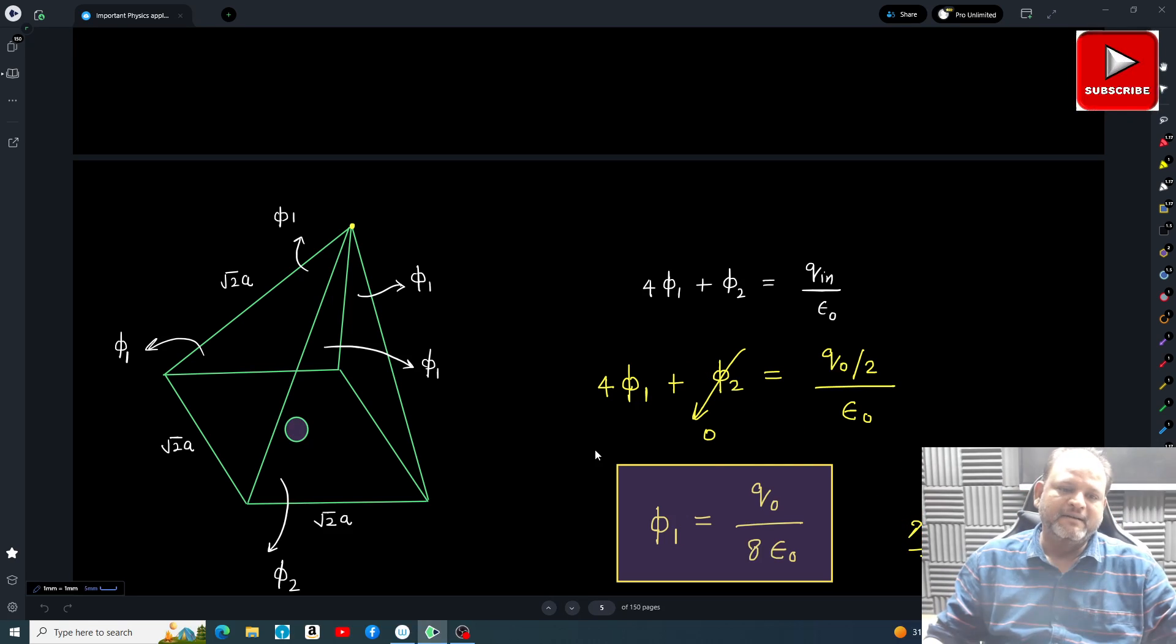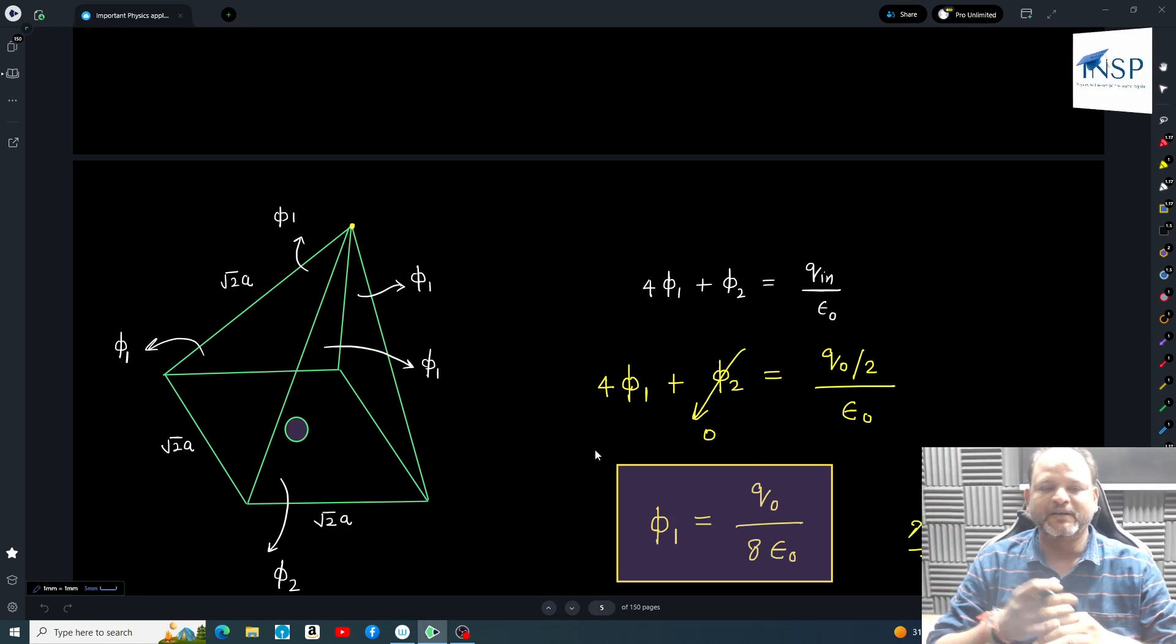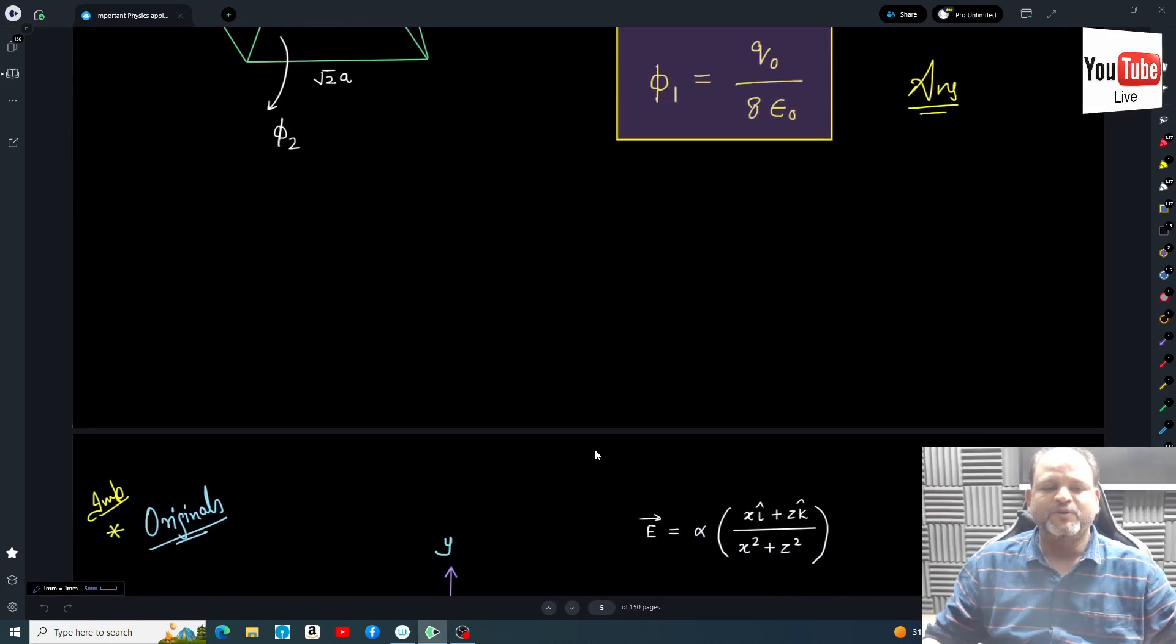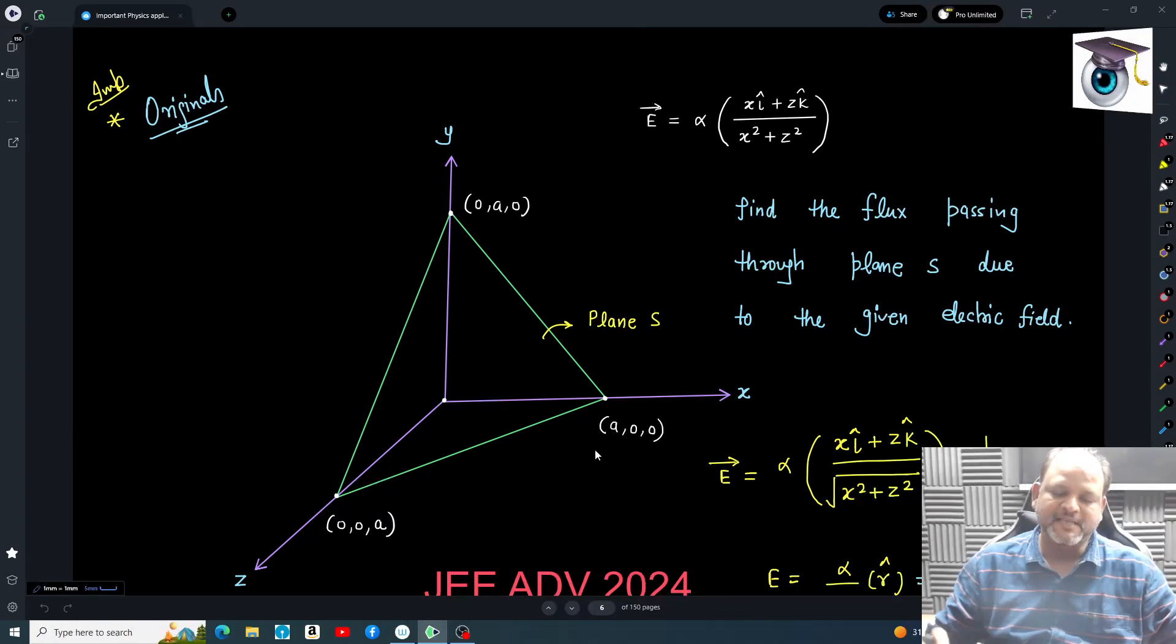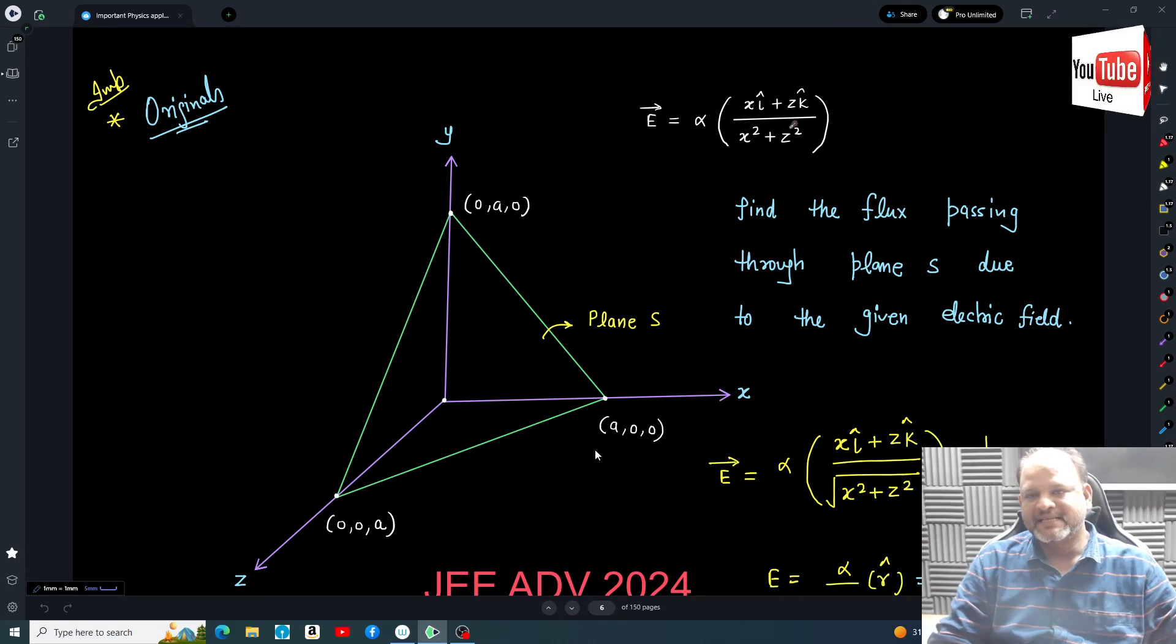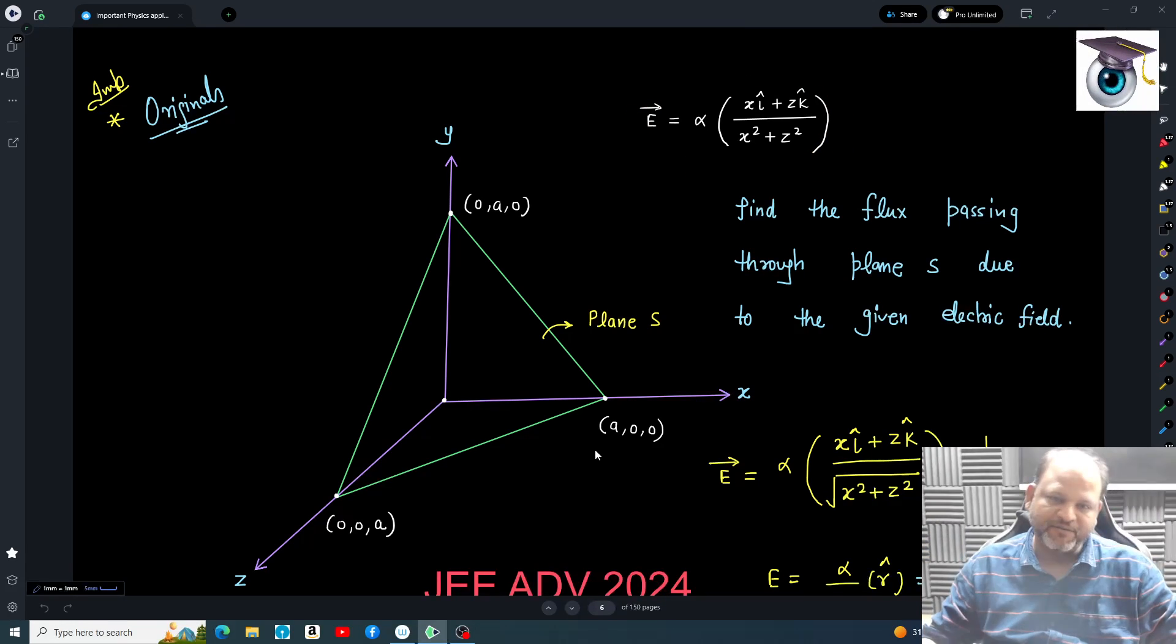So basically once you figure out this is a pyramid and the symmetry of the pyramid that we have to use. Then I am going to modify this further - same problem but this time I'm going to give you an electric field vector E = α(x𝐢̂ + z𝐤̂)/(x² + z²). Now it's a variable field, but if you remember I have done many questions like this on this channel, and those in regular classes - I'm pretty sure the first thing which will come to your mind is a wire.